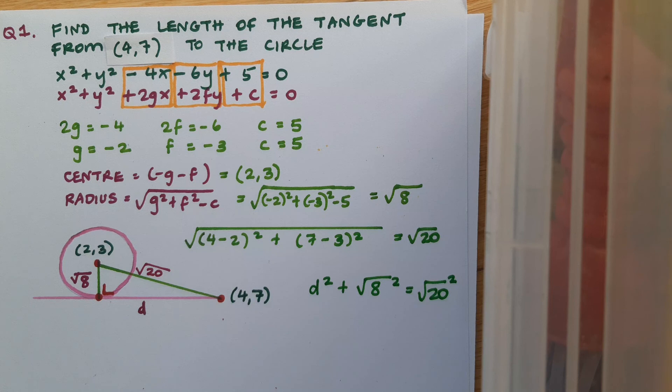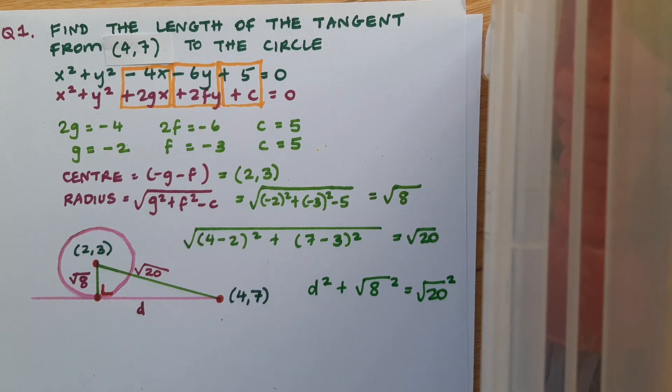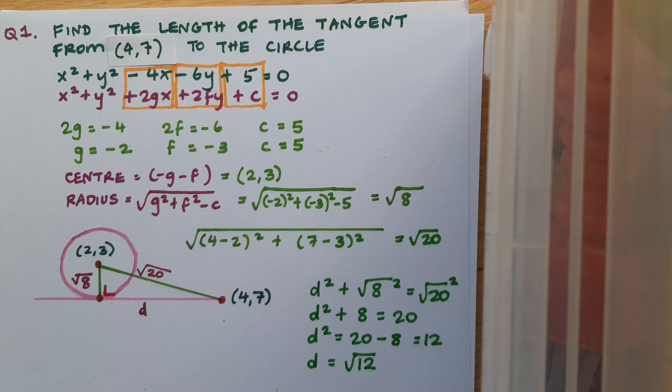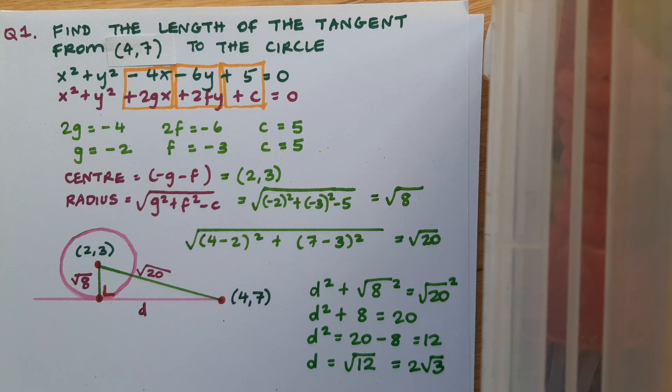And now we're all set up to use Pythagoras to find that D. So here's my equation: D² + (√8)² = (√20)². I'll square those roots. I'll subtract. And D is √12. And if you're using the calculator for this, it may say to you 2√3, but that's the same as √12. So either of those answers is fine.